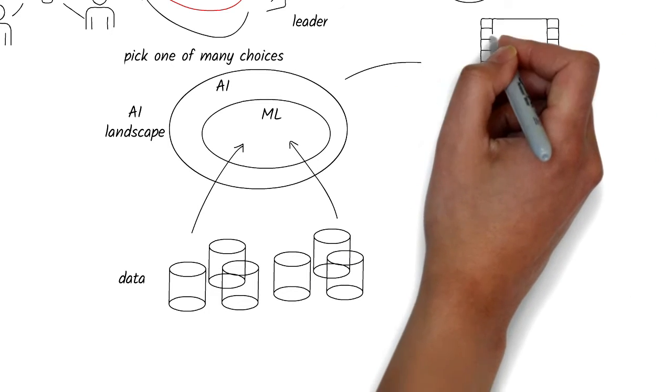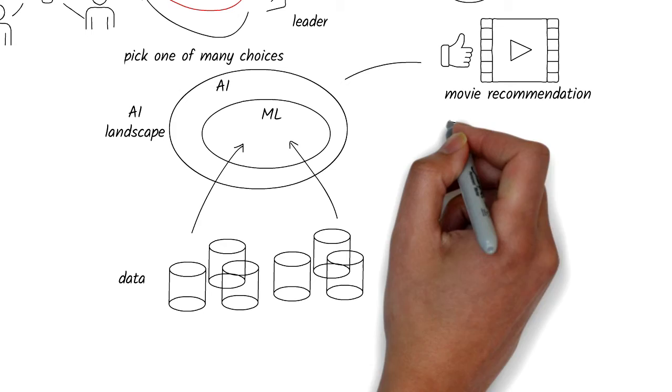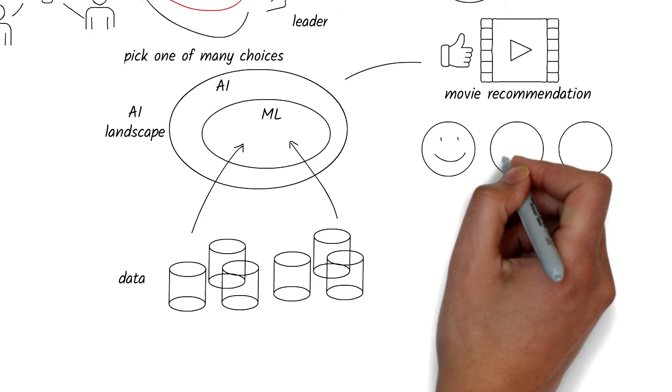Subsequently, the system can then make predictions, such as predicting what movie you might like based on your watch history, or classify new data into one of many categories.